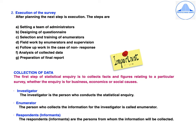Let us now discuss the collection of data. The first step of statistical enquiry is to collect facts and figures relating to a particular survey, whether the enquiry is for business, economics, or social causes. The investigator is the person who conducts the statistical enquiry. The enumerator is the person who collects information for the investigator. Respondents or informants are persons from whom the information will be collected.